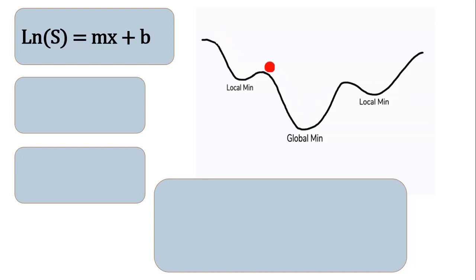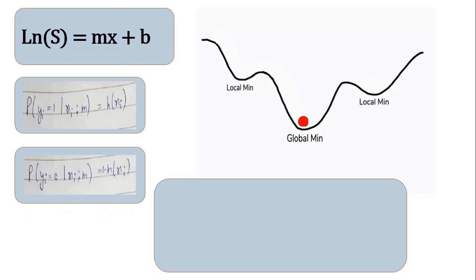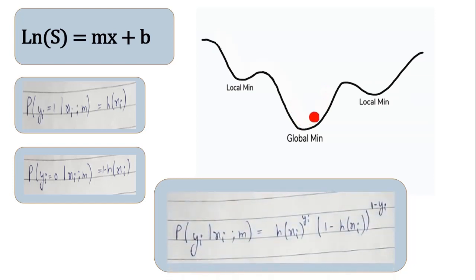Let's find the regression coefficients using log likelihood. The probability of y_i = 1 given x_i is h(x_i), and the probability of y_i = 0 given x_i is 1 - h(x_i). Using this, the probability of y_i given x_i is h(x_i)^(y_i) * (1 - h(x_i))^(1 - y_i). If y_i = 0, the h(x_i) term becomes 1, leaving only 1 - h(x_i). If y_i = 1, the (1 - h(x_i)) term becomes 1, leaving only h(x_i).